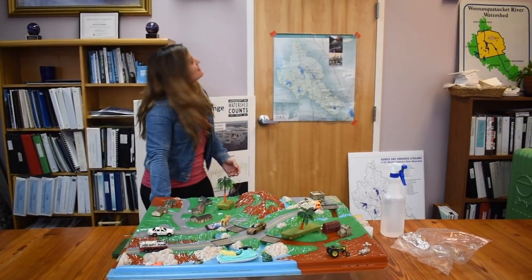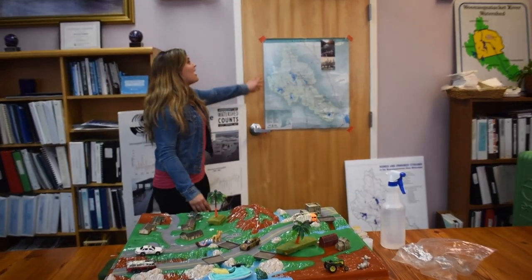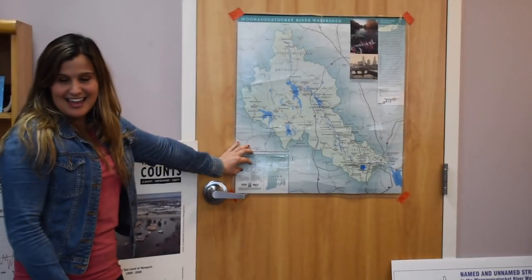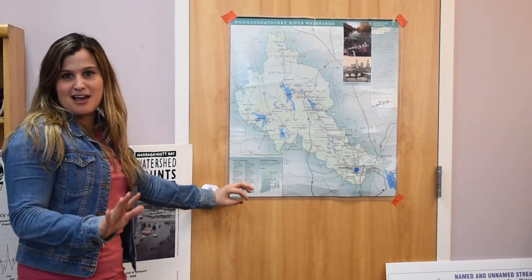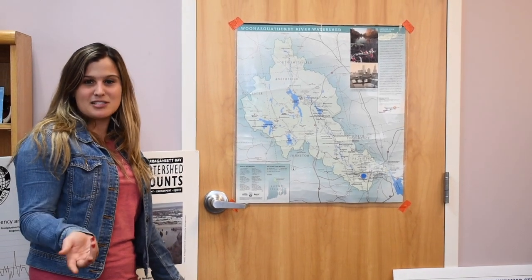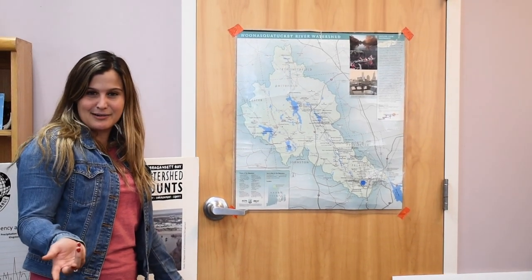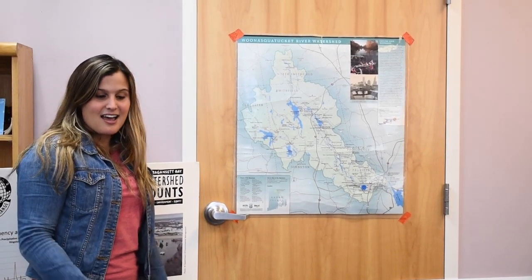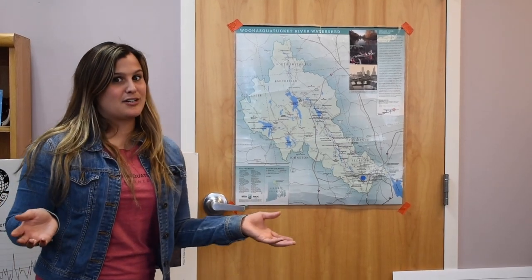For those of you who don't know, right behind me is actually a map of the Winosk-Watucket River Watershed, and you might be thinking — what's a watershed? In its simplest terms, a watershed is an area of land where all of the water drains to one place.